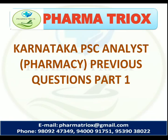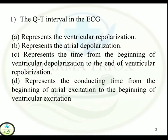Question 1: The QT Interval in the ECG. Option A represents the ventricular repolarization. Option B represents the atrial depolarization. Option C represents the time from the beginning of ventricular depolarization to the end of ventricular repolarization. Option D represents the conducting time from the beginning of atrial excitation to the beginning of ventricular excitation. Correct answer is Option C.